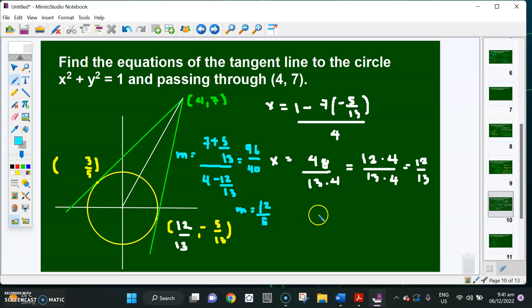Since I have the slope, I'll use either of the 2 points. Of course, it's easier if we use (4, 7). So the equation of the line here will be y minus 7 equals 12/5 times (x minus 4). And simplifying this, which is what we're looking for, 12x minus 5y minus 13 equals 0. So this is the first equation.